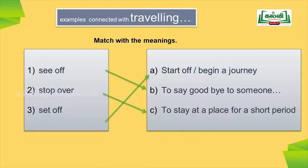Here are a few more phrasal verbs connected with traveling, from your textbook on page 118. 'See off' means to say goodbye to someone, maybe at an airport or railway station. 'Stop over' means to stay at a place for a short period. 'Set off' means to start off or begin a journey.